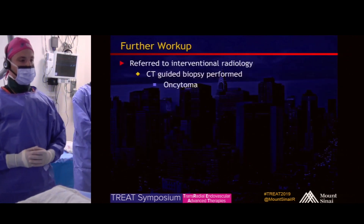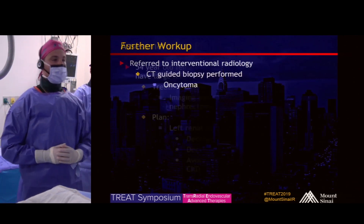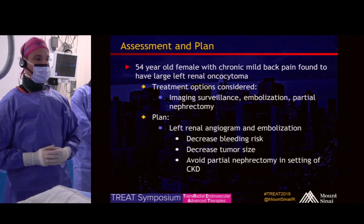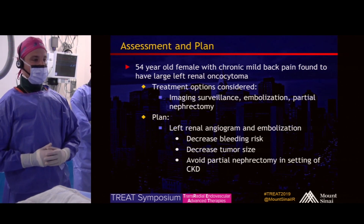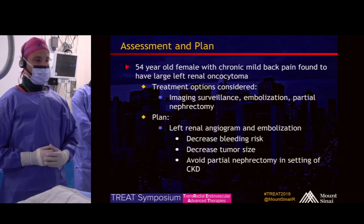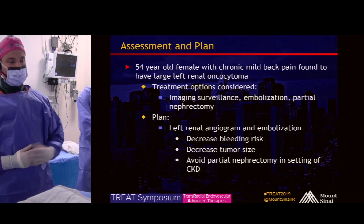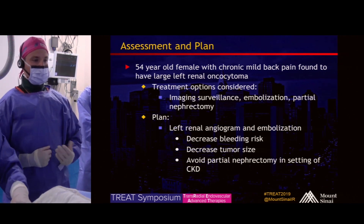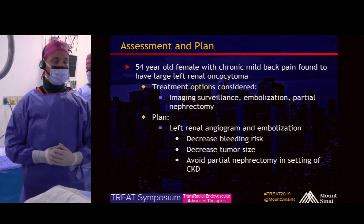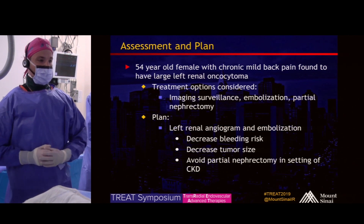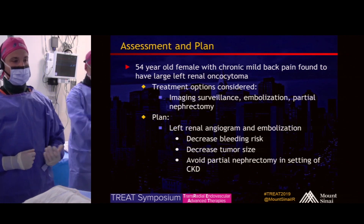She underwent a percutaneous renal biopsy, which demonstrated an oncocytoma. In summary, she's a 54-year-old female with chronic mild back pain found to have this large renal oncocytoma. Treatment options include imaging surveillance, given that it's a benign entity, although she is having symptoms with back pain. We could also perform embolization or partial nephrectomy with urology. The plan is to perform a renal angiogram and embolization to decrease bleeding risk, decrease the tumor size, and hopefully avoid a partial nephrectomy in the setting of her CKD.